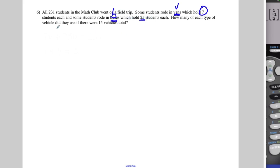That's my equation right there. How many of each type of vehicle did they use if there were 15 vehicles total? That's my other equation. 7V plus 25B equals 231, that's the amount of students. V plus B equals 15, that's the number of vehicles.